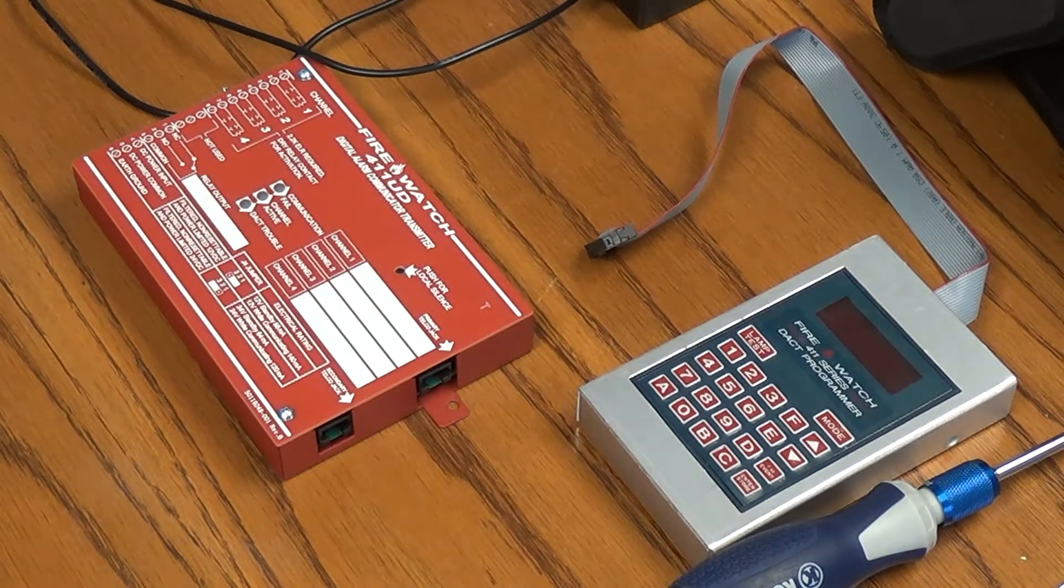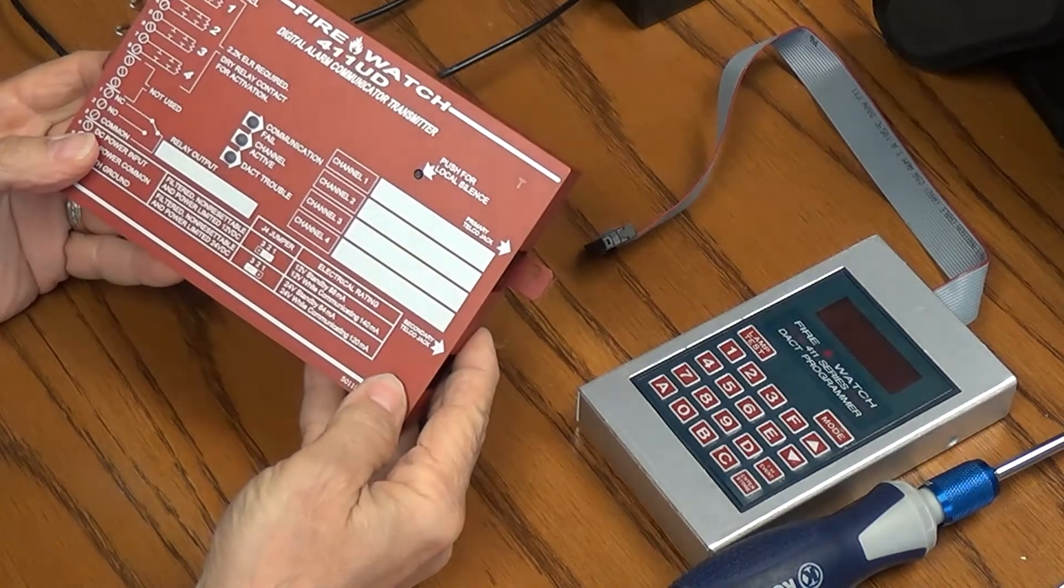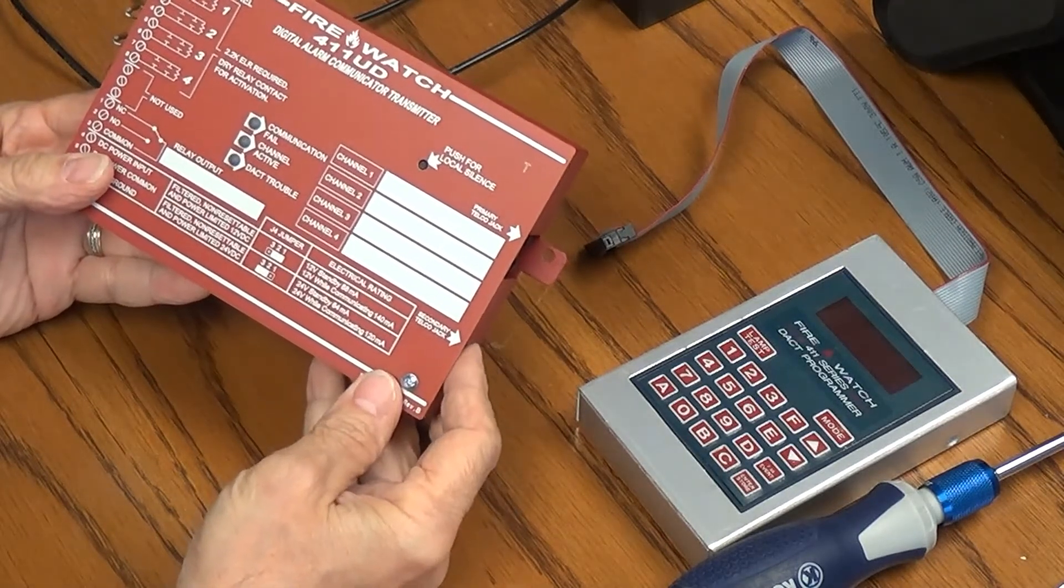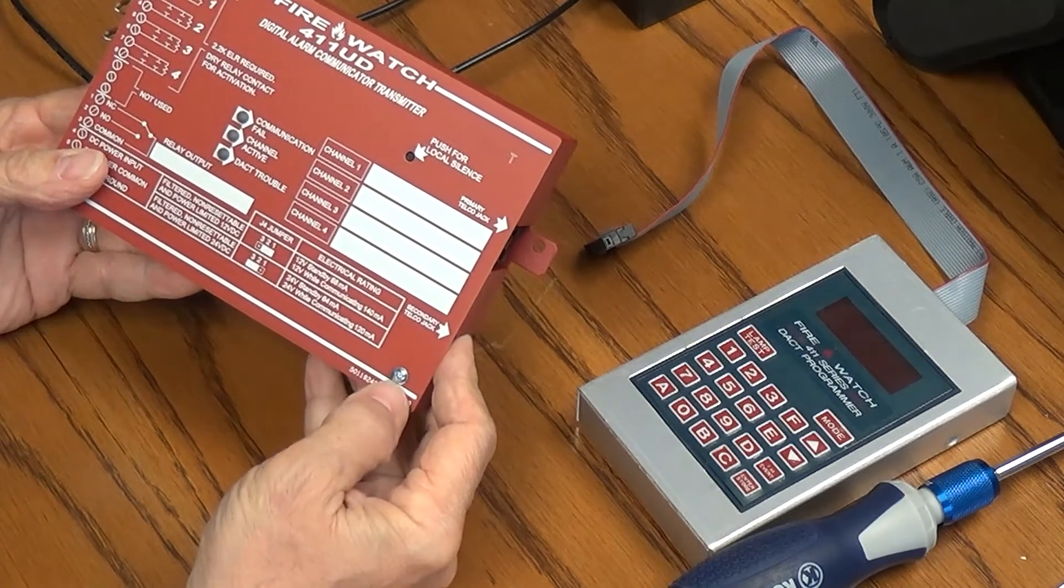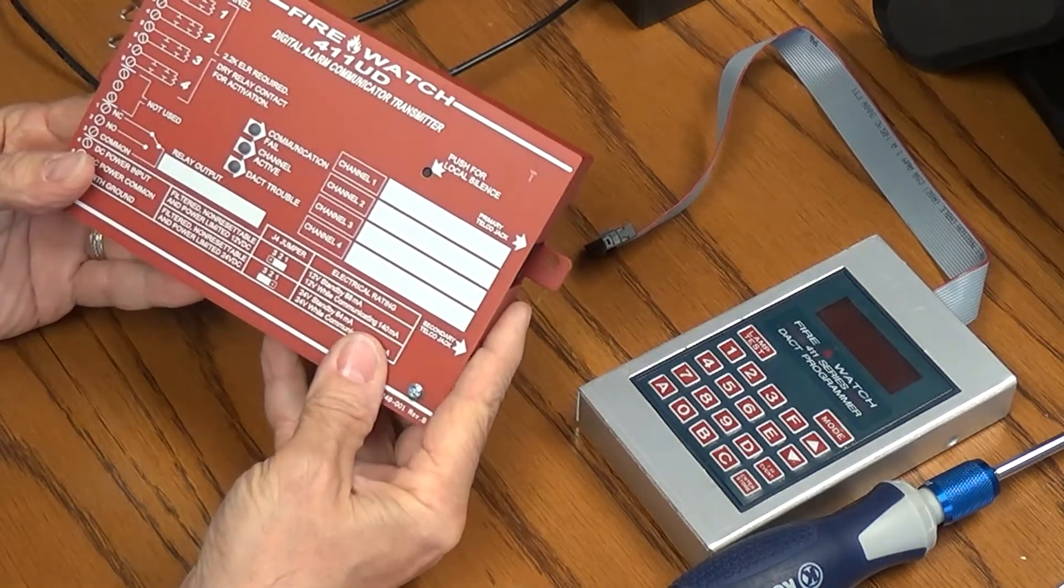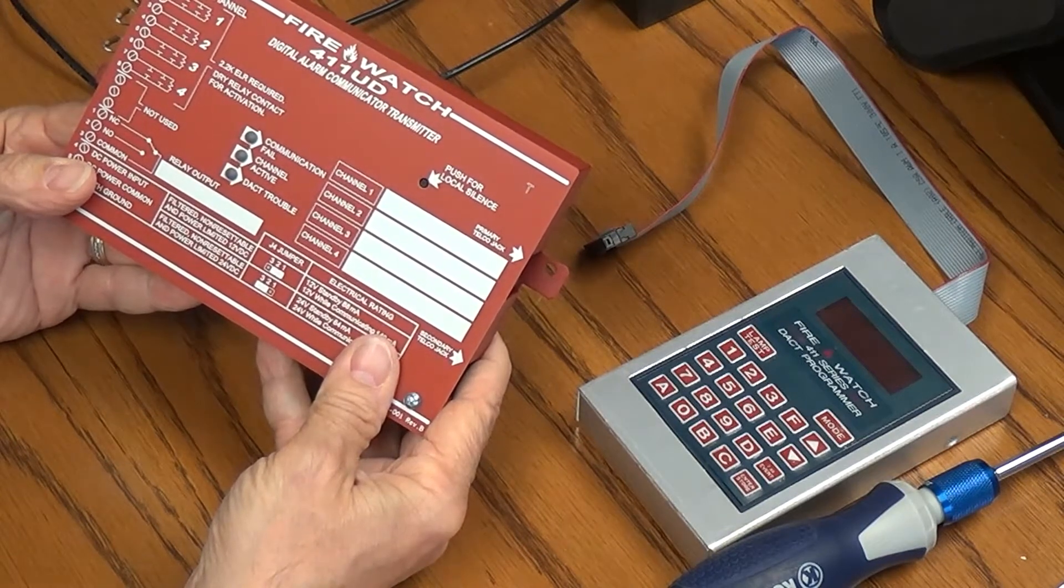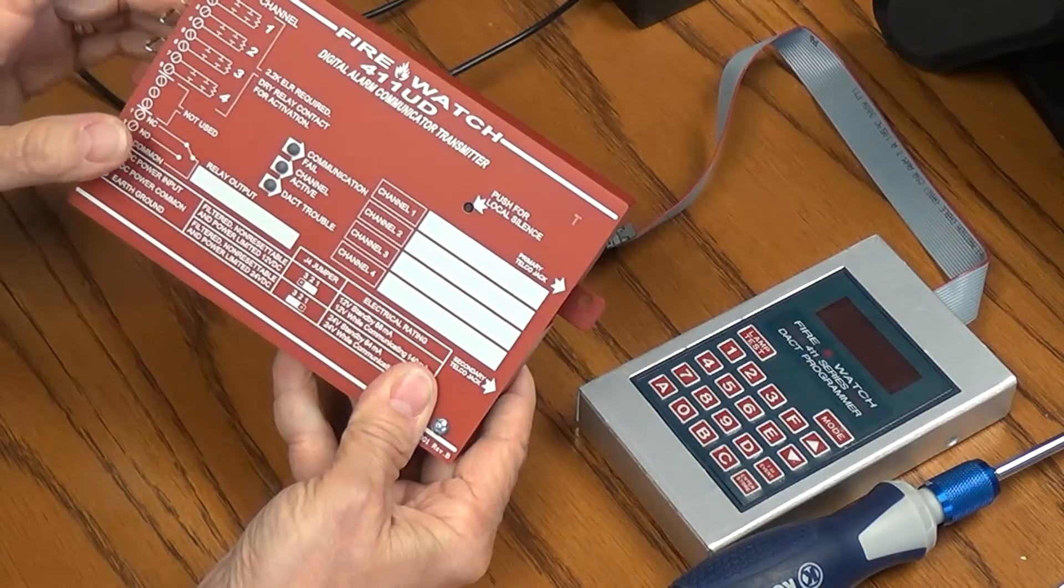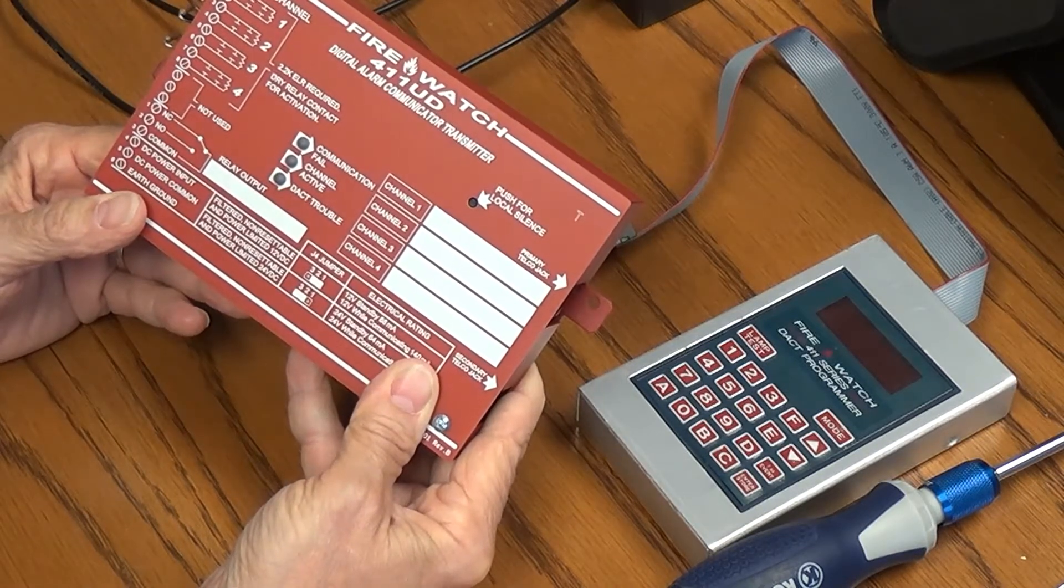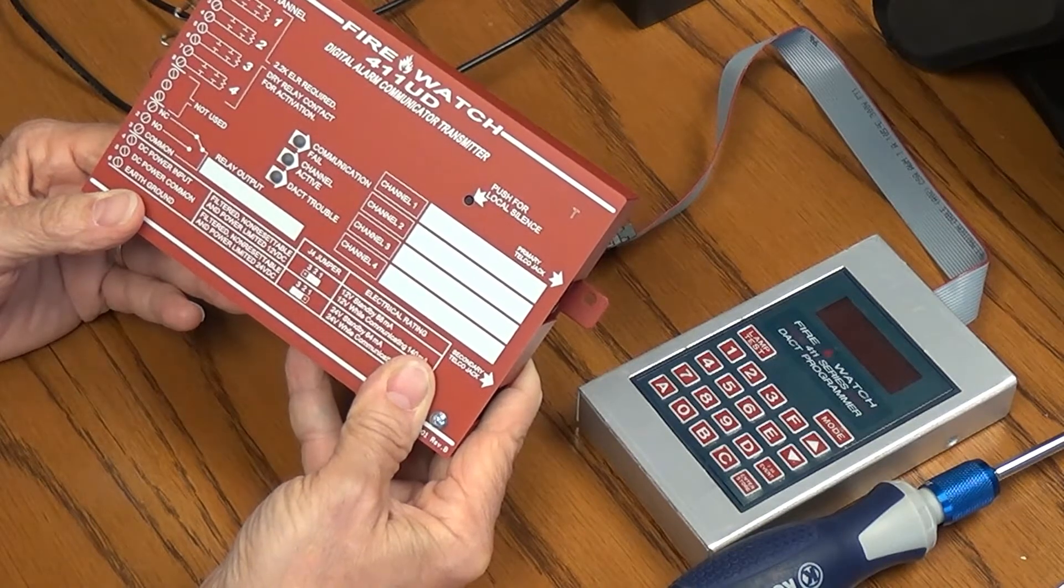Hey, this is Bob, and I just wanted to go over what I consider a lost art, and that is programming the FireWatch 411 UD Digital Alarm Communicator Transmitter. We use these to communicate to an IP DACT connected to the network so that we can have alarms sent from devices other than a fire panel. Programming these is a lost art.